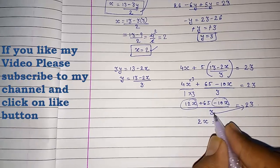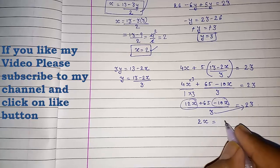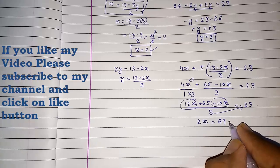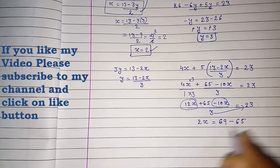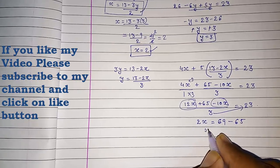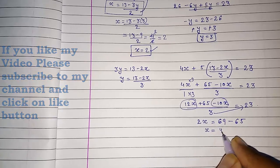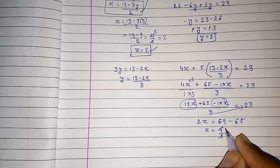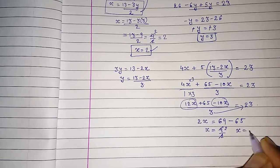It will become 12x - 10x = 2x (like terms). This 3 goes to the other side: 23 × 3 = 69, and +65 goes to the other side as -65, so 69 - 65 = 4. Therefore 2x = 4, and x = 2.